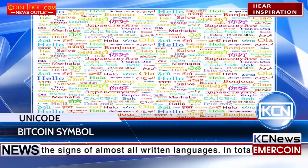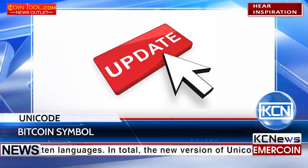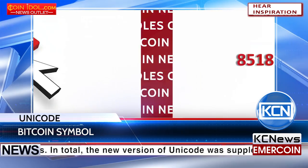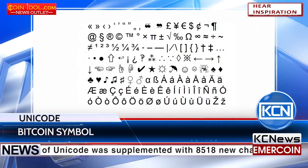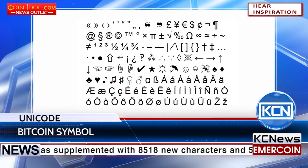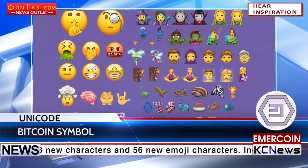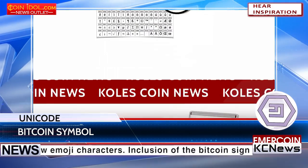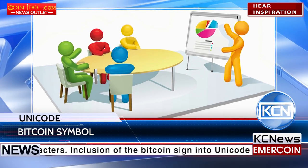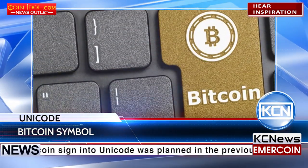In total, the new version of Unicode was supplemented with 8518 new characters and 56 new emoji characters. Inclusion of the Bitcoin sign into Unicode was planned in the previous version but was implemented only now.